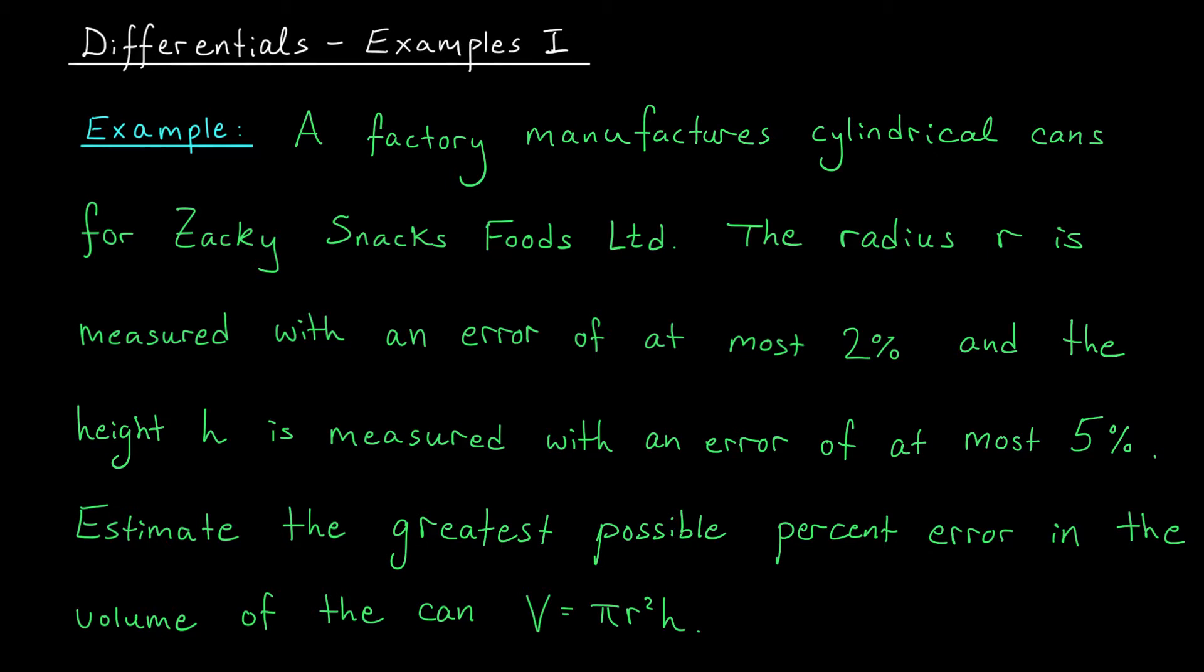So let's read the problem together. A factory manufactures cylindrical cans for Zacky Snacks Foods Limited. The radius r is measured with an error of at most 2% and the height h is measured with an error of at most 5%. We are asked to estimate the greatest possible percent error in the volume of the can.